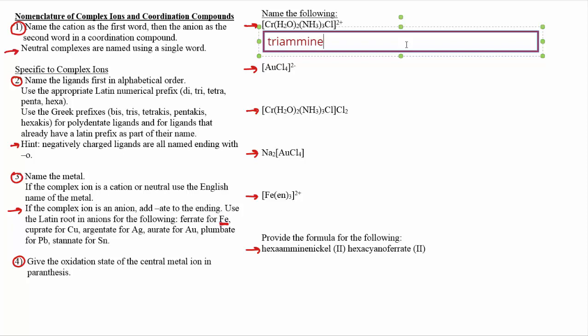So water comes next, it's named as aqua, and the alphabetical order is based on the name in the compound. There's two of those, so that's going to be diaqua. And then finally chloro, when there's only one, you don't say mono, you just simply give the name of the ligand. So chloro, and then finally we'll say the name of the metal, so chromium, and then finally you give the oxidation state of the metal in parentheses.